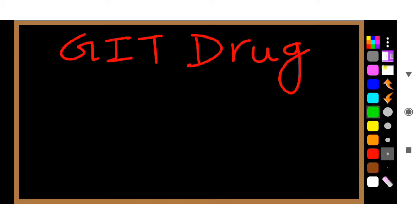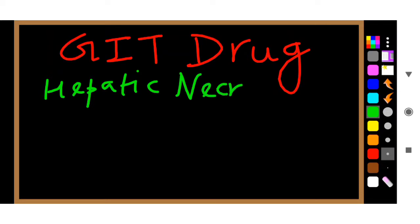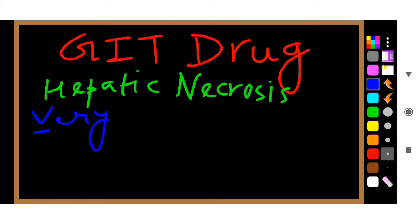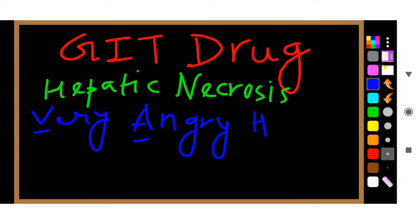First is hepatic necrosis. Which GIT drug causes hepatic necrosis? It is remembered by the formula 'Very Angry Hepatocyte.' Why is the hepatocyte angry? Because this GIT drug is causing hepatic necrosis — that is why they are very angry. So remember the mnemonic: Very Angry Hepatocyte.